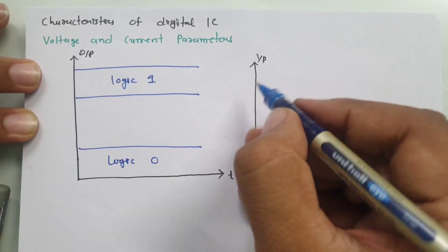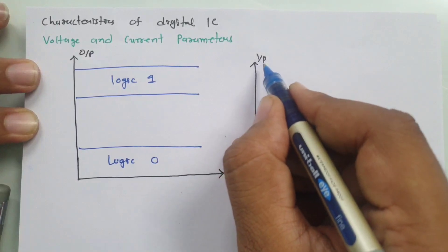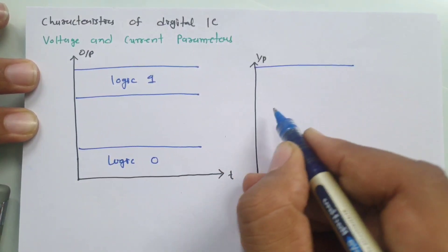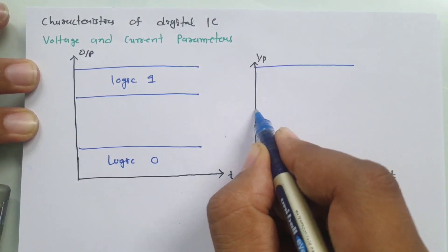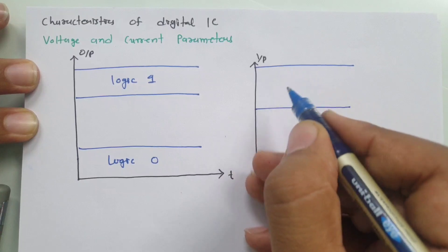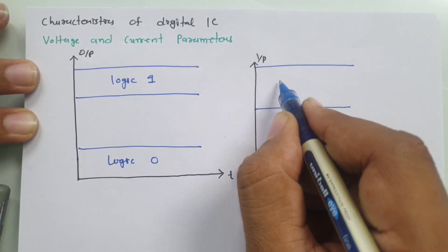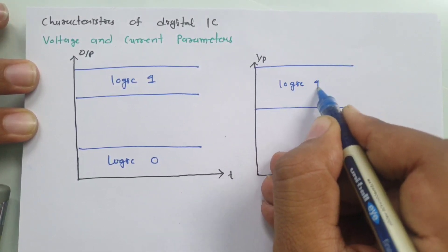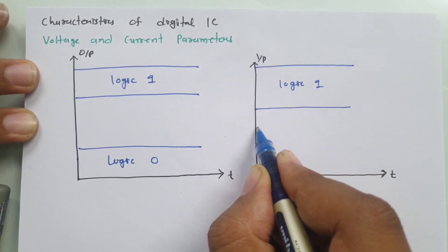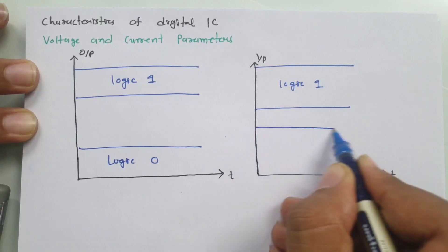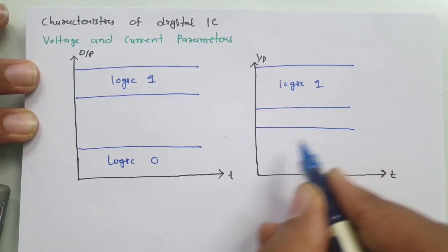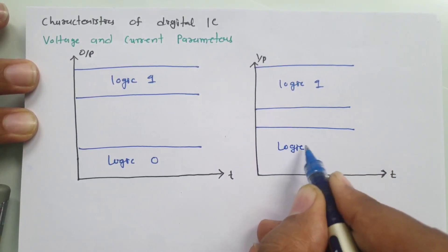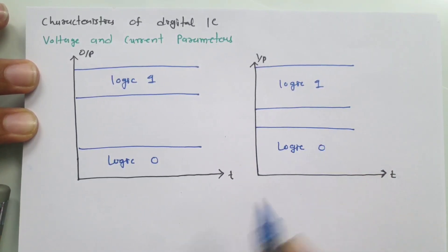For input, we have a voltage range that defines our input as logic 1, and here this is the voltage range at the input side that defines logic 0.